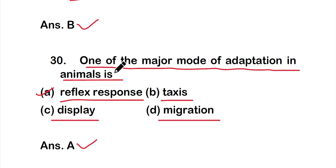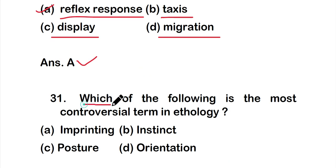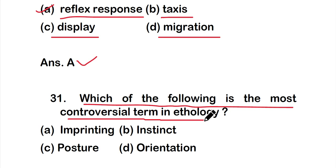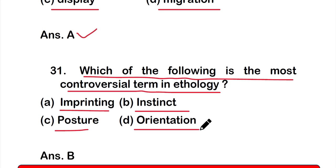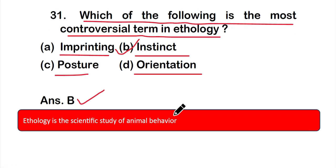Question number 31: Which of the following is the most controversial term in ethology? Option A: imprinting, option B: instinct, option C: posture, or option D: orientation. The correct answer is option B — instinct is the most controversial term in ethology. Ethology is the scientific study of animal behavior.